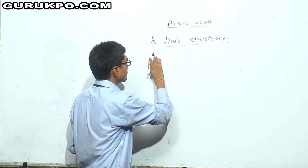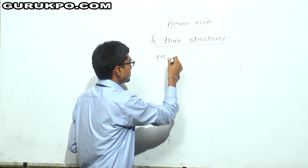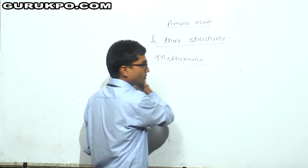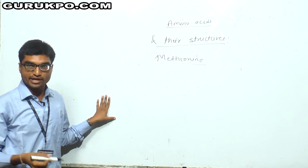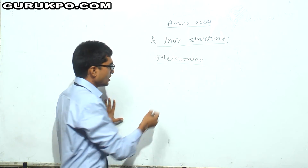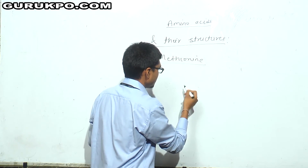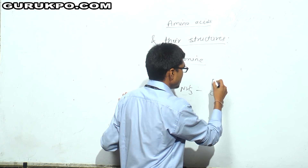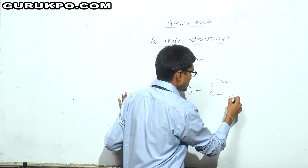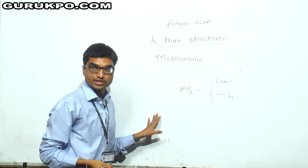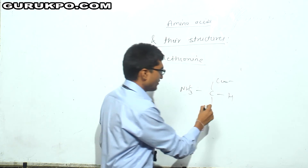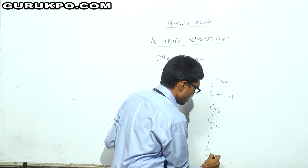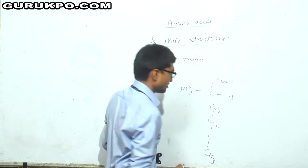Structure of methionine. The structure of methionine is totally different from all other amino acids. The structure of methionine is NH3⁺, C, COO⁻, H, and in place of R we have CH2, CH2, S, and CH3.